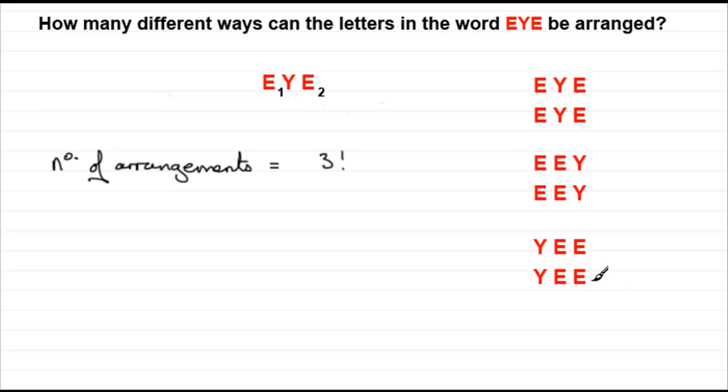What happens is that if we put these subscripts back in, when we look at this block here, the E's can interchange or rearrange amongst themselves two factorial times. Two factorial being two times one or two different ways. So what I've got to do is divide this by two factorial, the number of ways that the E's can rearrange amongst themselves.